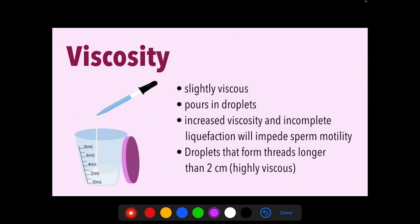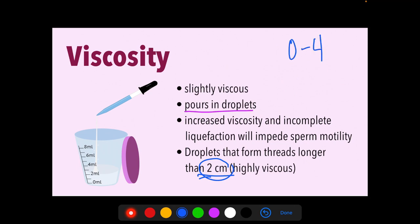Normal semen is slightly viscous, appearing as droplets. Increased viscosity and incomplete liquefaction impede sperm motility. Droplets that form threads longer than 2 cm are considered highly viscous. Incompletely liquefied specimens are usually clumped and highly viscous. Viscosity ratings of 0 to 4 can be used: 0 for watery and 4 for gel-like semen. Other books report it as low, normal, or high viscosity.